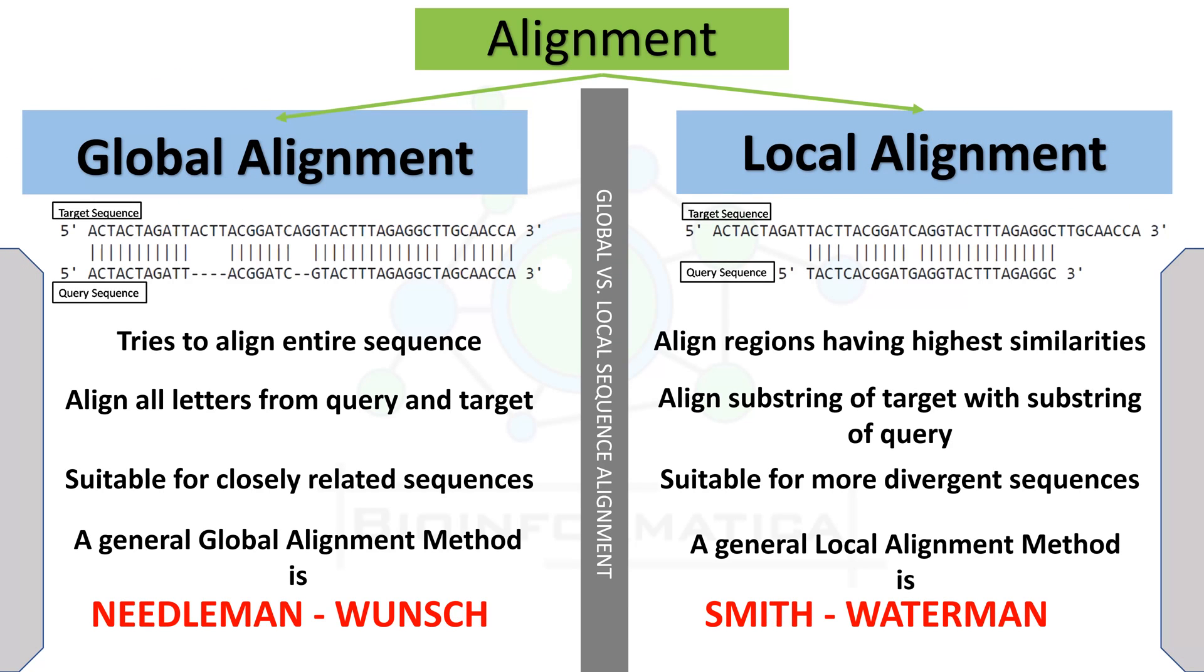We can broadly divide alignment methods into two types: global alignment and local alignment. The global alignment tries to align the entire sequences with each other, while local alignment aligns regions having the highest similarities. Global alignment aligns all letters from the query and target sequences, while local alignment aligns substrings of the target sequence with substrings of the query sequence. Global alignment is more suitable for closely related sequences, while local alignment is more suitable for divergent or distantly related sequences. The most common global alignment algorithm is Needleman-Wunsch, and the commonly used local alignment algorithm is Smith-Waterman.